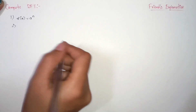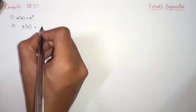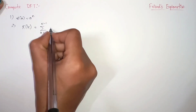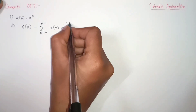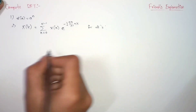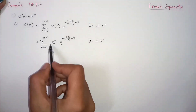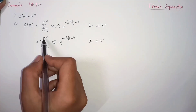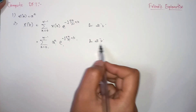The formula to find the Discrete Fourier Transform is: X(k) equals summation from n equals 0 to capital N minus 1 of x(n) into e to the power of minus j 2π/N times nk, valid for all k values. Here x(n) is a^n, so we substitute it: summation from 0 to N minus 1 of a^n times e to the power of minus j 2π/N times nk.